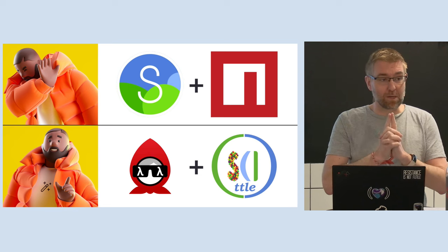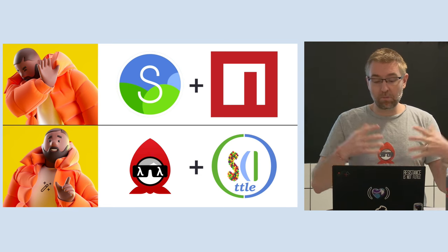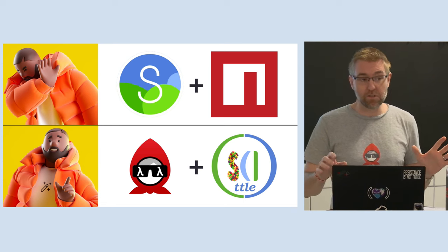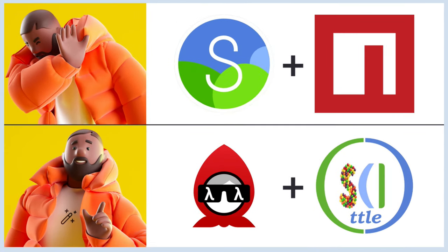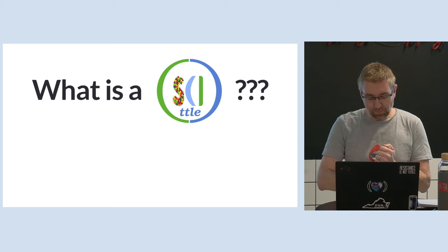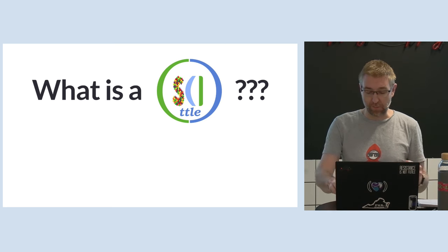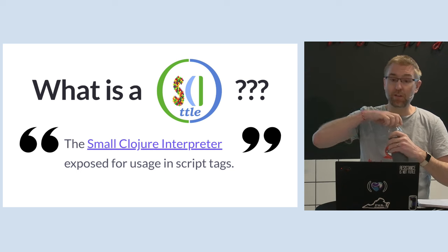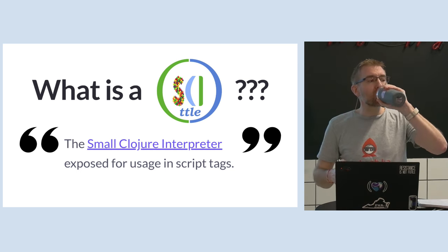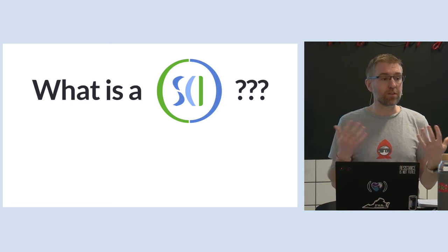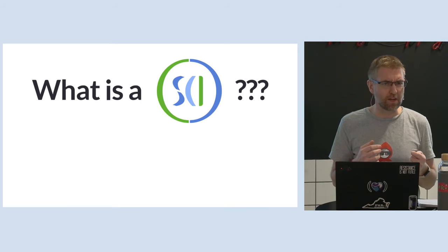There's a solution to this, and that's what I'm going to talk about today. I'm going to talk about a wonderful way of life called Babashka plus Skittle. Unless you're in the Clojure community, you may never have heard of either of these things. So what is Skittle? Going to the Skittle GitHub repo, it says it is the small Clojure interpreter exposed for usage in script tags. Very self-explanatory. This is often called Sci — S-C-I.